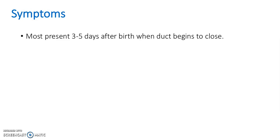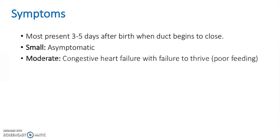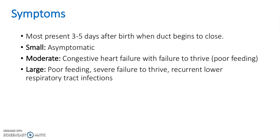What symptoms can we see in a patient with a patent ductus arteriosus? Most of them present within three to five days after birth, when the duct begins to close. If it's a small defect, the patient may be asymptomatic. If it's moderate, they may get congestive heart failure with failure to thrive, which is poor feeding. If it's large: poor feeding, severe failure to thrive, and recurrent lower respiratory tract infections are common.